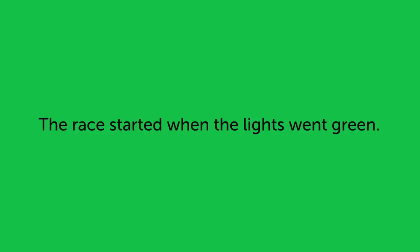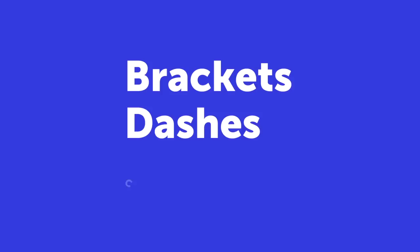The race started when the lights went green. This sentence describes, in a simple way, what happened at the desert race. But you might want to add more information. You can do this with the help of brackets, dashes or commas.